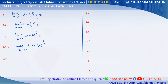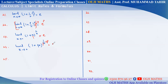The answer is e. If we see the rule — limit n→∞ of (1 + 1/n)^n = e. If the exponent is 1/x, the answer is e. If it is px, multiply and divide by p, so the answer is e raised to the power p.